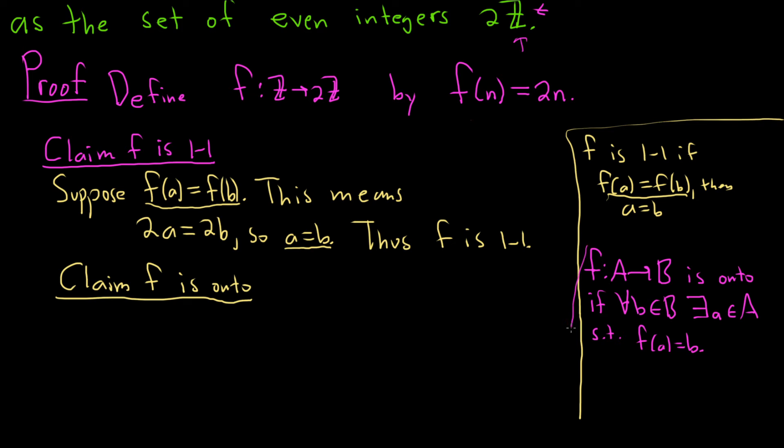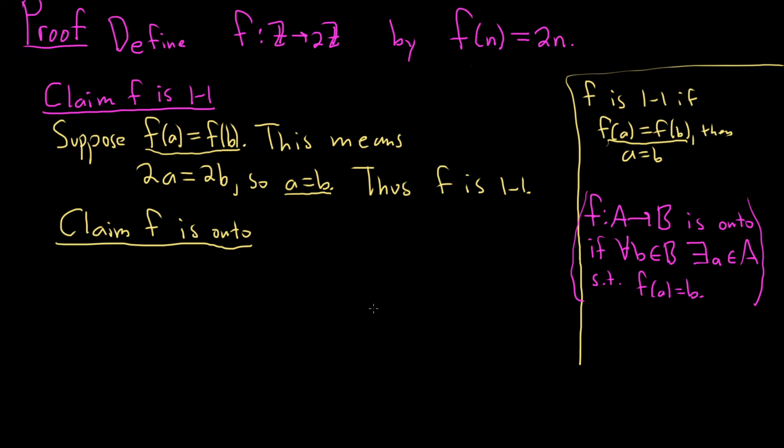Most of the time when people are having a hard time with this stuff, it's usually the definition's an issue or the problem's really hard. In this case, the definition might be the issue if you're having a hard time. So we'll start by taking an element in capital B, which is this 2z, and this here is our A.